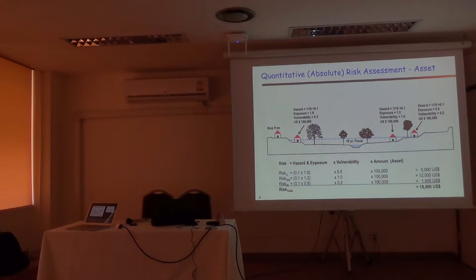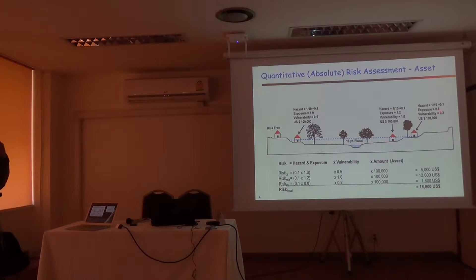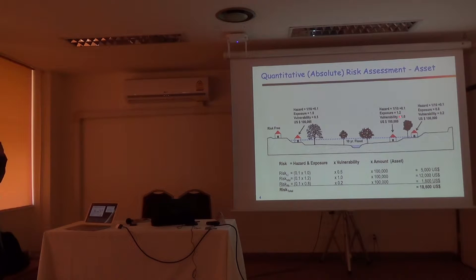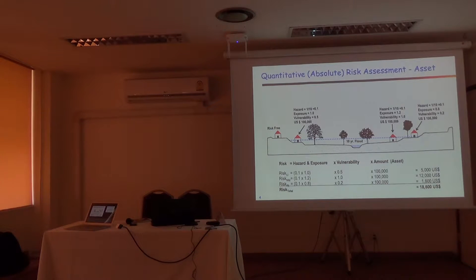You have exposure: normal exposure is 0.8 (80%), and this house in the low-lying area with water up to the ceiling has exposure of 1.2. Vulnerability: this house you can expect 20% damage; the one with water up to the ceiling has 100% damage (1.0); and the third has 50% damage (0.5). The value of these three houses is 1, 100, and 1,000 thousand dollars. You calculate the risk — the expected damage if a 10-year flood happens — as $5,000, $12,000, and $1,600 respectively. Total expected damage is $18,600 for this flood intensity.